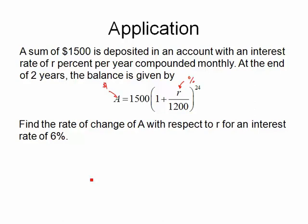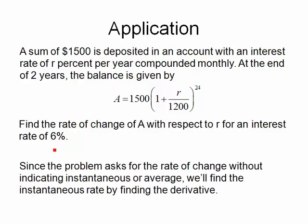What I want to do is find the rate of change of A with respect to r for an interest rate of 6%. Now since the problem asks for the rate of change without indicating instantaneous or average, we'll find the instantaneous rate by finding the derivative.